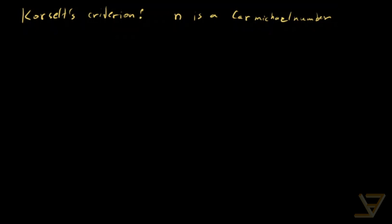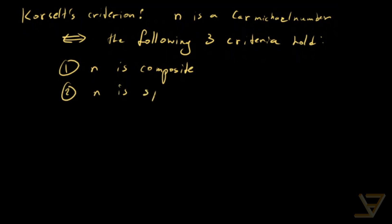So it says that n is a Carmichael number, n being a positive integer, if and only if the following three criteria hold. First, n is composite. Second, n is square free, meaning it's a product of distinct primes. No square of a prime divides the number.